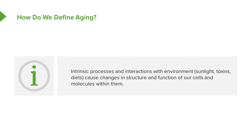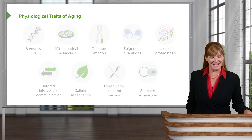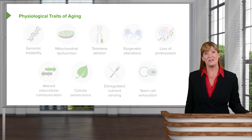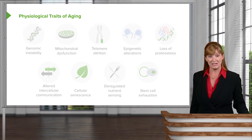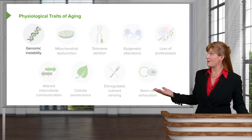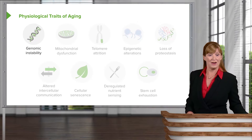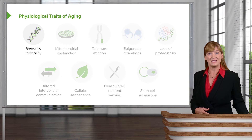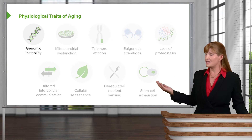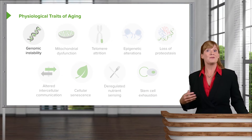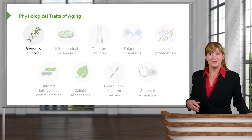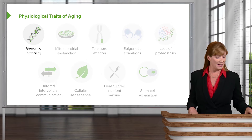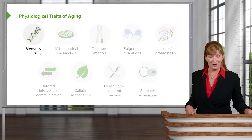We can categorize all of these things — these physiological traits of aging — into nine different categories. We start out with genomic instability, and I'm sure that already you could put a number of things in that category. My intention in this lecture is to put all of those things into these categories for you, so that you have it all together and are well prepared on the topic of aging for your exams.